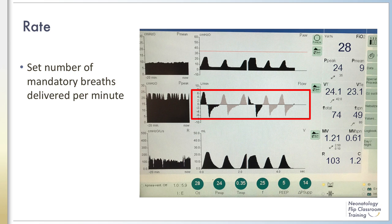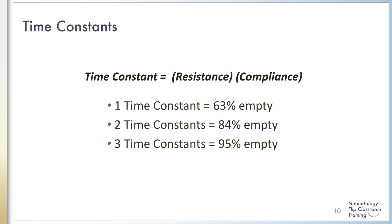Spontaneous breathing rates are inversely related to the gestational age and time constant of the patient. Smaller infants with less compliant lungs usually breathe faster than larger infants with normally compliant lungs. Inhalation occurs faster than exhalation, so ensuring adequate time for both is important when considering the set rate. Time constants measure how quickly the lung can inflate and deflate, and are directly related to both compliance and resistance. One time constant empties 63% of the patient's tidal volume, and 3 to 5 time constants are required to ensure complete emptying of the lung.